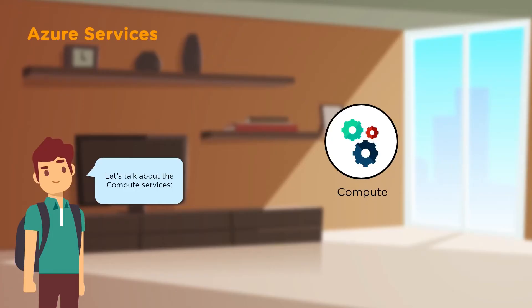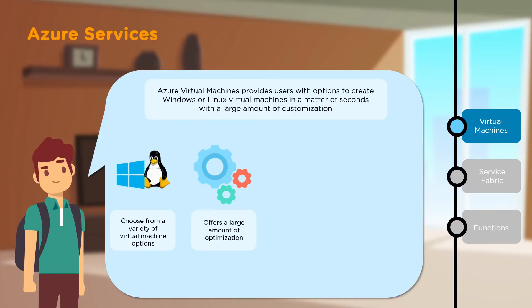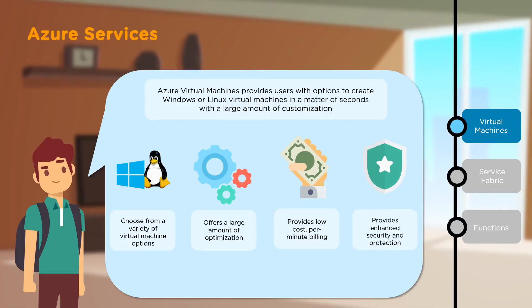Let's look at some individual services within these domains. First, you have Azure Virtual Machines, which gives you the opportunity to create Windows or Linux virtual machines in a matter of seconds with a large amount of customization. You can choose from a wide variety of virtual machine options, with optimization for OS size, allocated storage, and version. It also provides low cost and per-minute billing — you're only charged for how much time you use the service — along with enhanced security and protection.